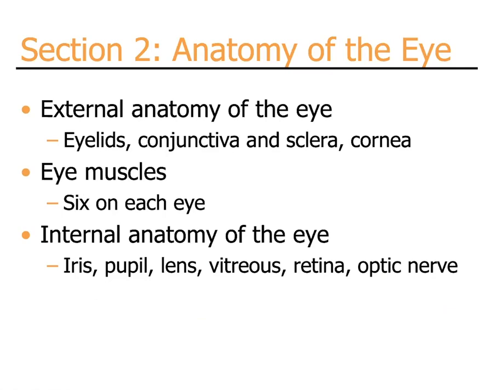Section two: anatomy of the eye. In this section, we will touch on the external anatomy of the eye, including the eyelids, conjunctiva, sclera, and cornea. We will also cover the eye muscles, of which there are six on each eye, and the internal anatomy of the eye, which most of us are less familiar with.